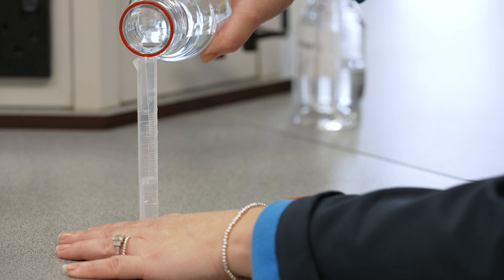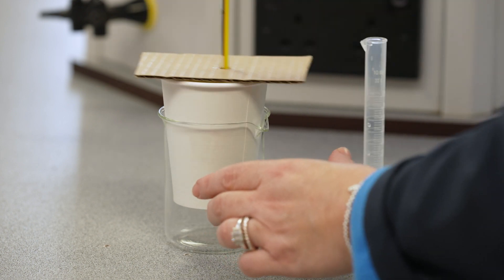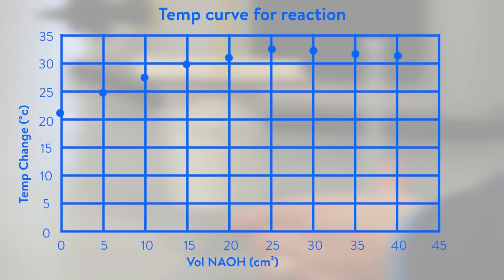Calculate the mean temperature values for each addition of sodium hydroxide. Students can then produce a graph using their results similar to the one shown.